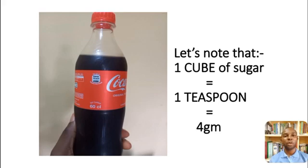So for the purpose of this video, we are going to be using a plastic bottle of coke that contains 60cl. And let us note the following: one cube of sugar is equal to one teaspoon of granulated sugar, which is equal to four grams of sugar when we weigh it on the chemical balance or on the weighing scale.